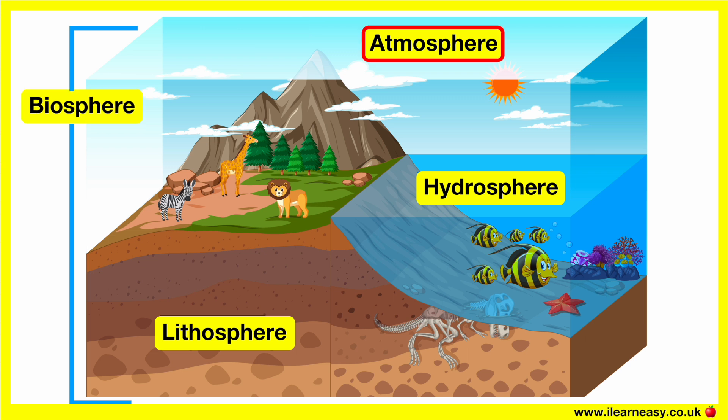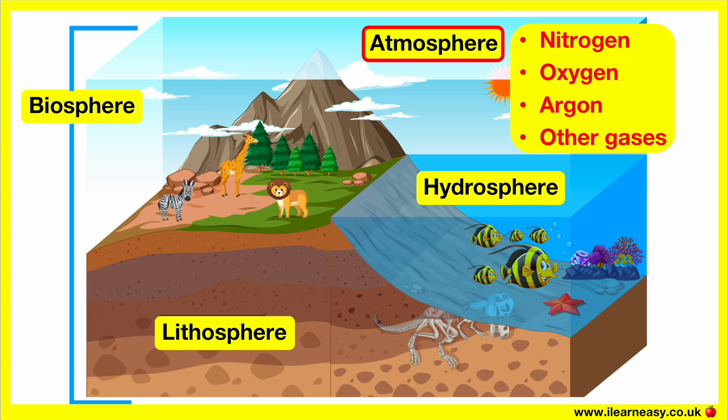Atmosphere. This is essentially the air. It is primarily made up of the gases nitrogen, oxygen, argon, and the remaining are other gases such as water vapour, carbon dioxide, methane, neon, etc.